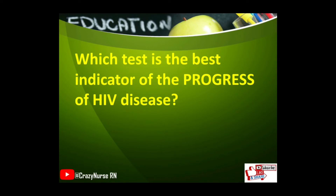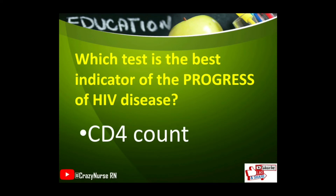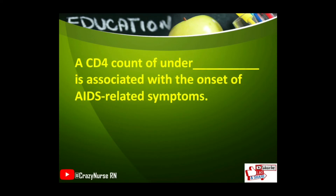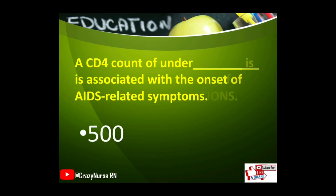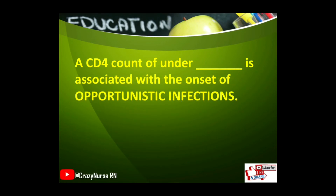Which test is the best indicator of the progress of HIV disease? CD4 count. A CD4 count of under 500 is associated with the onset of AIDS-related symptoms. A CD4 count of under 200 is associated with the onset of opportunistic infections.